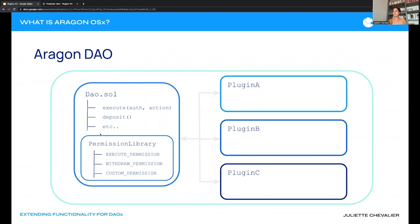Each DAO has its own permission library with the different permissions it can implement. What's interesting about this visual is that it really exemplifies how our protocol is only a permission management system and a vault — everything else, every functionality the DAO can do, is based on plugins. Plugins are really the key and the center of what DAOs can do.